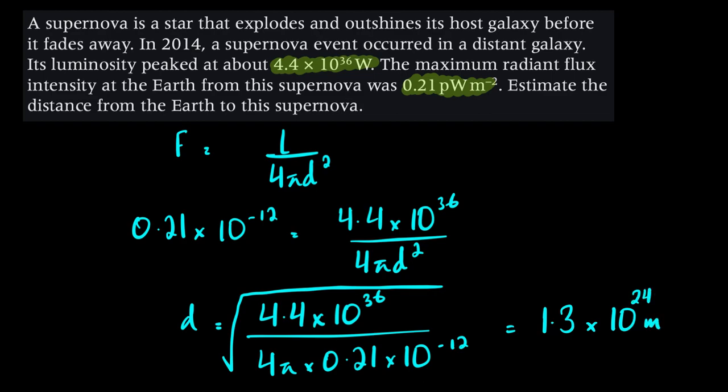If you talk about Cepheid variables, they have less luminosity, so they can only give us so much distance. But supernovas, being much brighter, can actually enable us to find much larger distances.